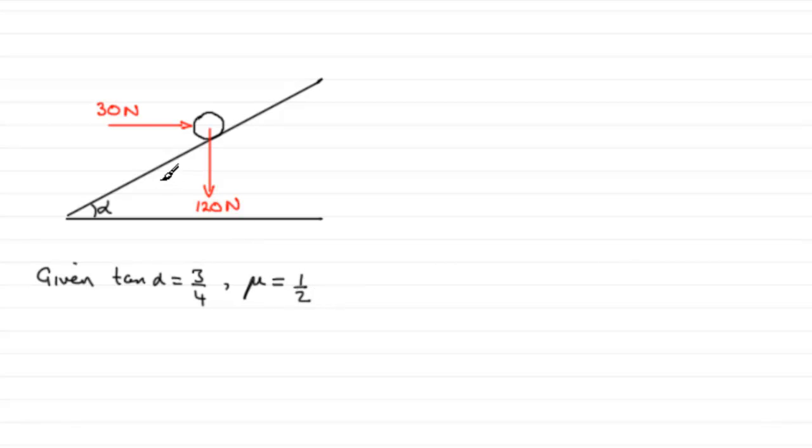Now the particle is held at rest in equilibrium by a horizontal force of magnitude 30 newtons. It acts in this vertical plane containing the line of greatest slope of the plane through particle. What we've got to do is show that the normal reaction between the particle and the plane has a magnitude of 114 newtons.